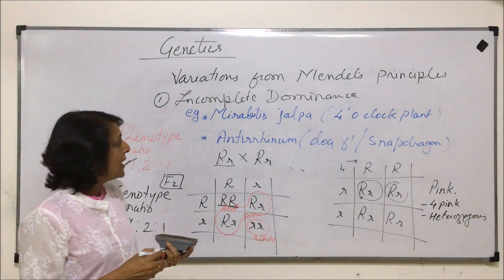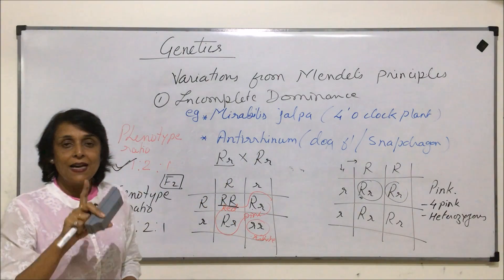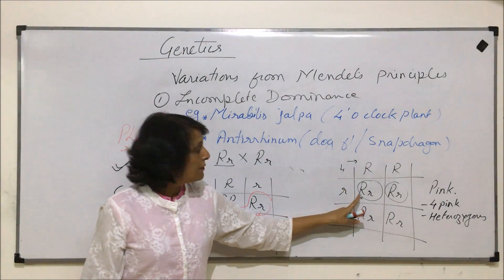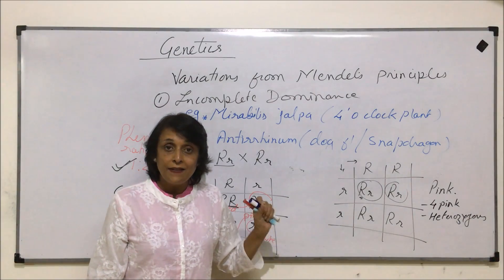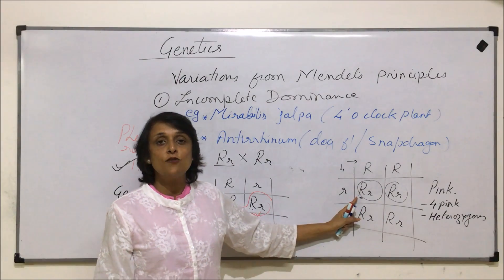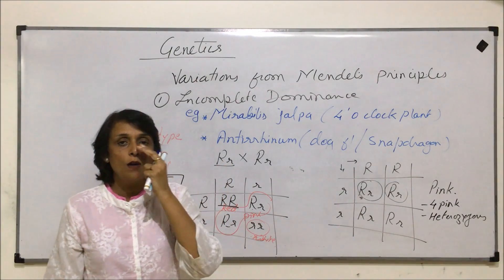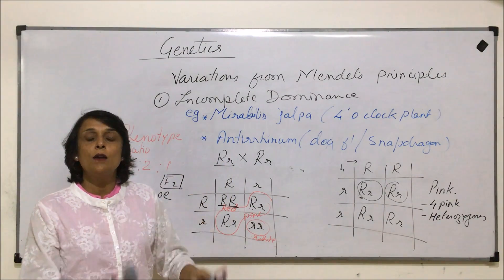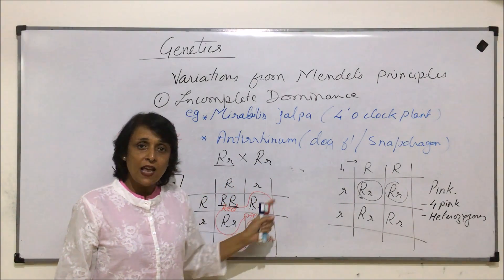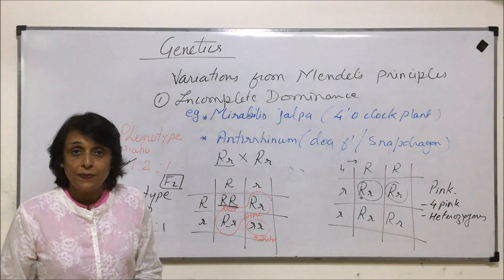So in case of incomplete dominance in Mirabilis or Antirrhinum, starting with pure red crossed with pure white, we get all pink in F1 instead of red. The reason is the gene responsible for producing red pigment is not able to dominate completely, and the recessive gene also produces a little white — that's why there is a blending of the two. When F1 members are selfed, the phenotype and genotype ratios in F2 are the same.